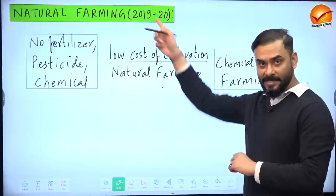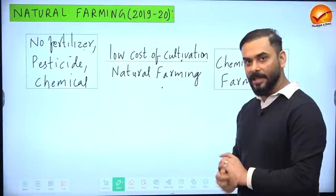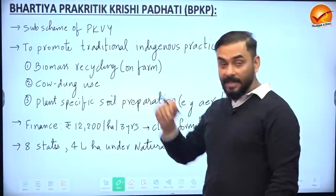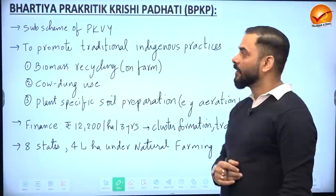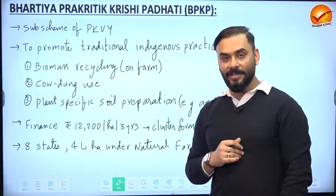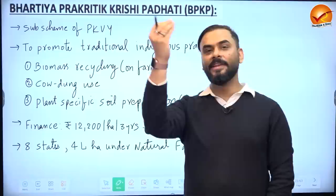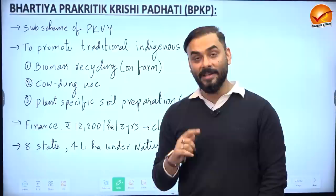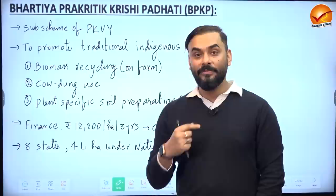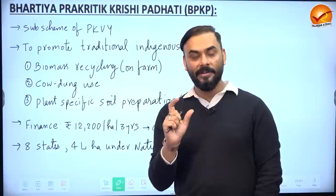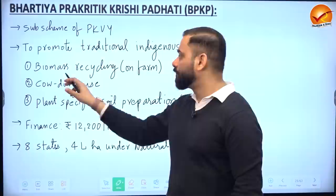Under the concept of natural farming, the scheme called Bharatiya Prakritik Krishi Paddhati (BPKP) promotes Indian indigenous methods of cultivation. For example, dead leaves and plant branches are decomposed naturally and converted into organic manure, and animal dung from cow or buffalo is used for organic farming.